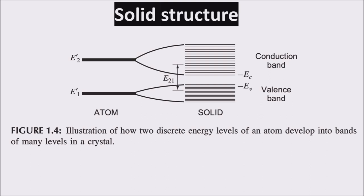In the conduction band, electrons have enough energy to be free to move — they have broken the crystal bond. Between these bands there can be a gap, so in order to free an electron, moving it from the valence band to the conduction band, we need to give it some energy.